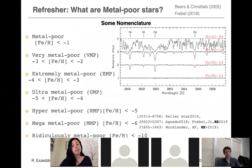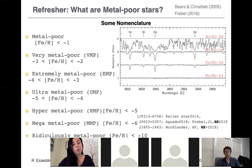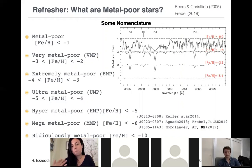A refresher on metal-poor stars: by regular definition, a metal-poor star has an iron-to-hydrogen abundance below minus one. This nomenclature was introduced by Tim Beers and Norbert Christlieb in 2005, and later reviewed by Anna Frebel. The nomenclature continues for different types: as we find less iron by factors of ten, we call them successively very metal-poor, extremely metal-poor stars, up to whatever nomenclature you want for iron-to-hydrogen below minus ten. Of course, we have not found any star below minus ten in metallicity.